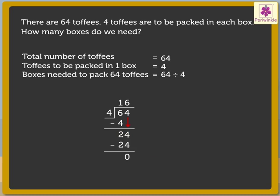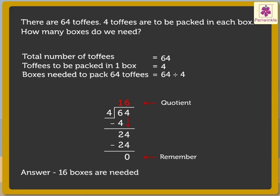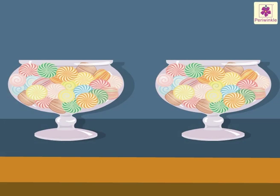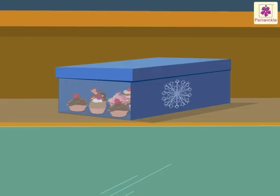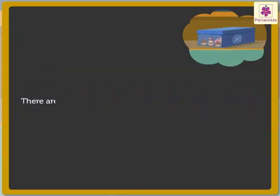We write the number 24 under 24. Finally, subtract 24 from 24, which gives us zero. Write zero in the ones column. The quotient is our answer: 16 boxes are needed to pack 64 toffees.